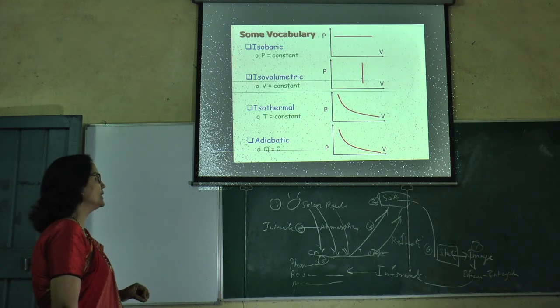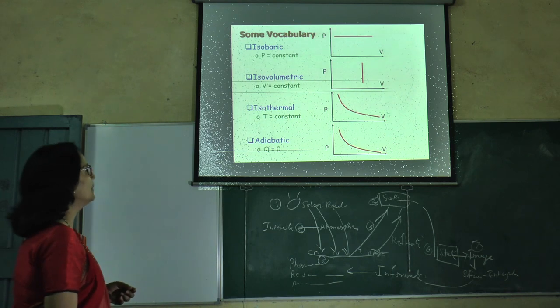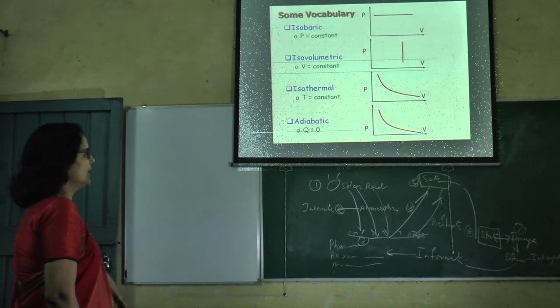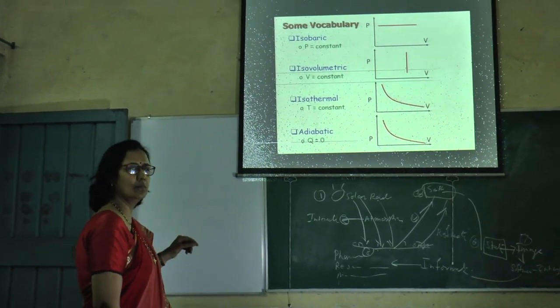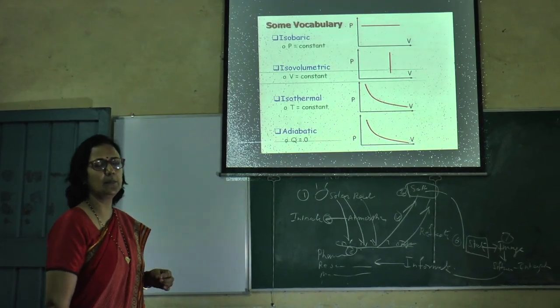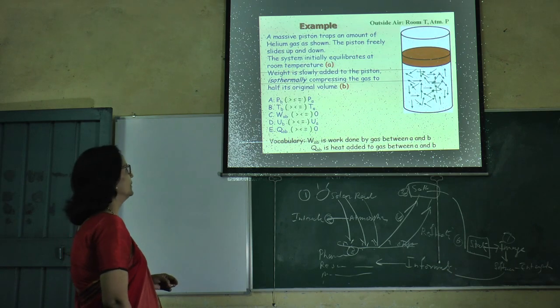In adiabatic process, no exchange of heat, therefore Q is zero. Pressure versus volume is also obtained like isothermal process, but different between both. In isothermal process, temperature is constant. In adiabatic process, heat exchange is zero.